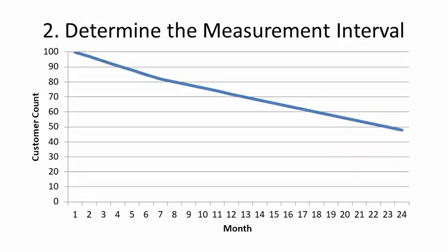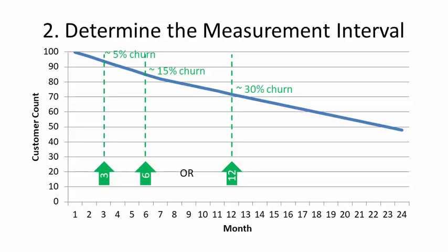The second step is to define the churn measurement interval. As you recall, churn rates may vary at different times. You'll need to choose a fixed point in time to measure churn, say at three months, six months, or a year.